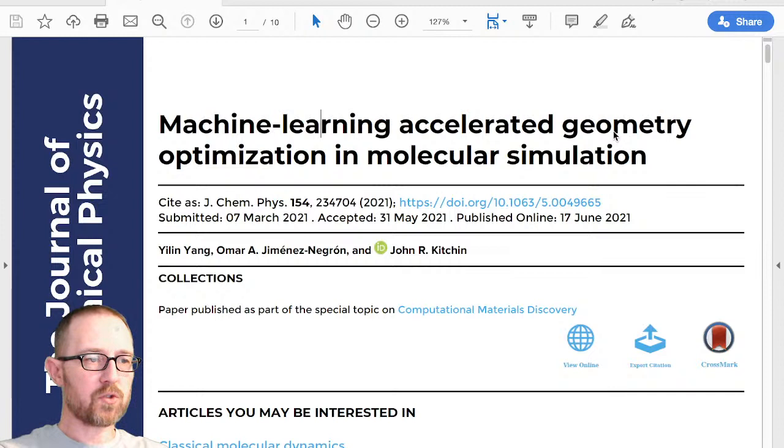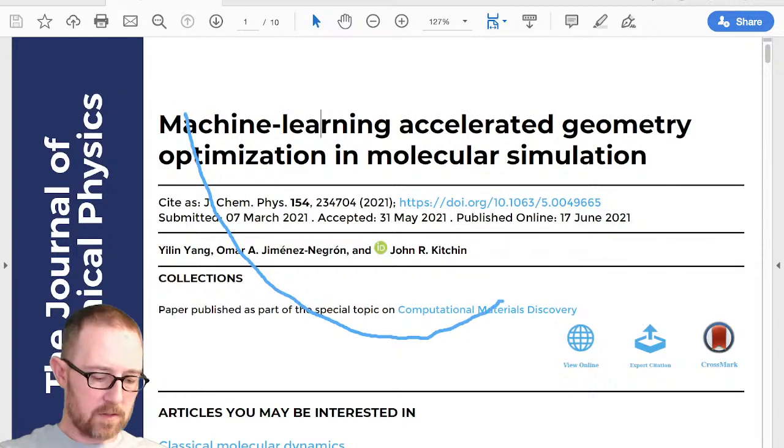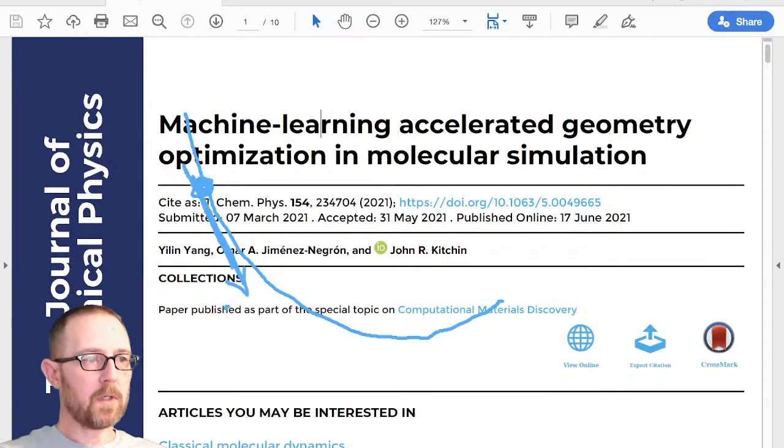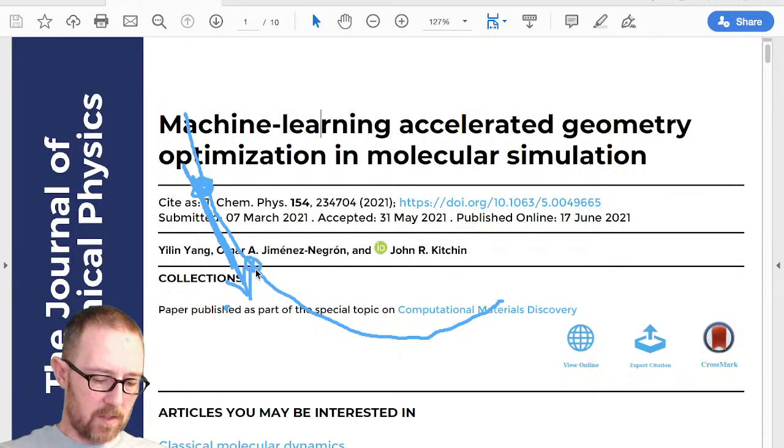And the basic idea in here is if we have in one dimension a potential energy surface like this and this is our initial starting point, what we do is use the forces that are the gradient, that tells us what direction to go that's downhill in energy, and then you take a bunch of iterative steps like this until you get to a minimum in energy.